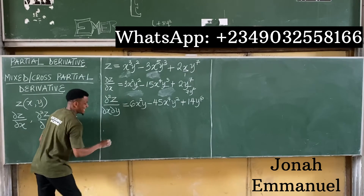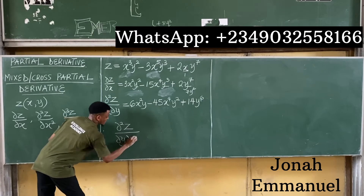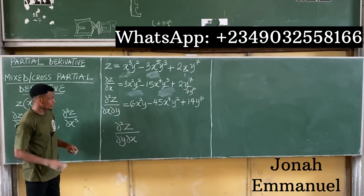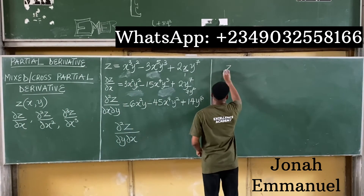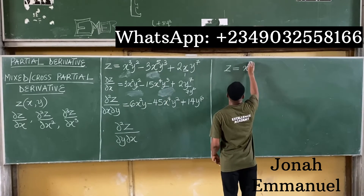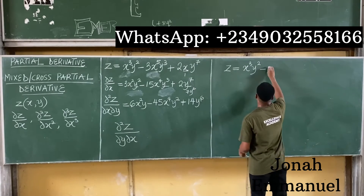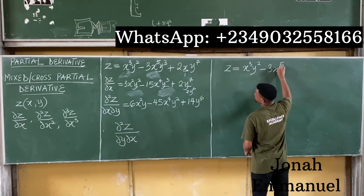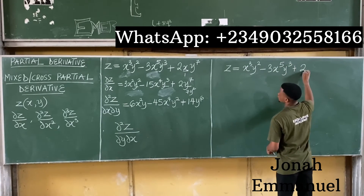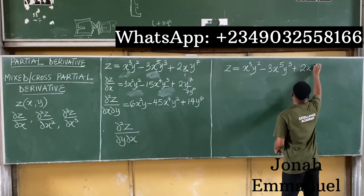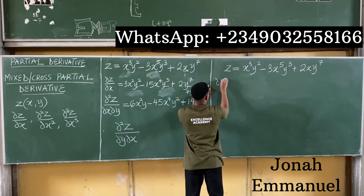Now let's reverse it. What if we're asked to find ∂²z/∂y∂x? We use the same concept but in reverse order. Starting again with z equals x³y² minus 3x⁵y³ plus 2xy⁷, we now first find ∂z/∂y.